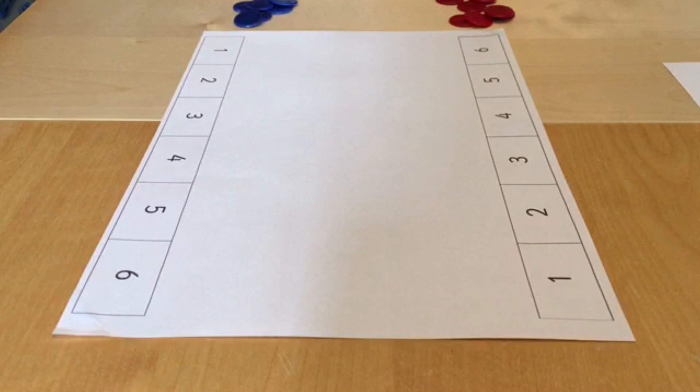This is a game for two players. For this game you'll need a piece of paper with the numbers one to six written down either side, a dice, and some counters or something that you can use as counters.